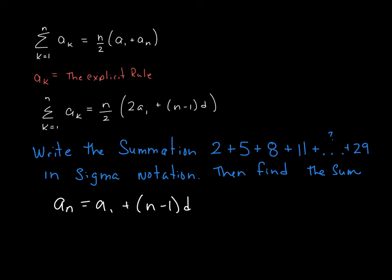So the explicit rule is a sub n equals a1 plus n minus 1 times the common difference. So we can find the common difference. I just look at between 5 and 2, so I subtract that. My common difference is 3. So that gives me a sub n equals, a sub 1 is the first term, that is just 2. So that gives me 2 plus, I distribute the fact that d equals 3, and then it gives me 3n minus 3, or a sub n equals 3n minus 1. So that's my explicit rule.